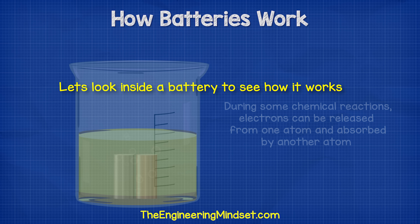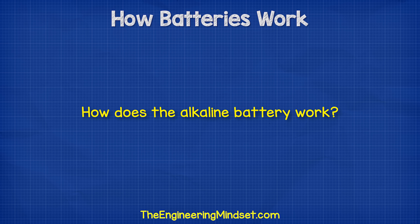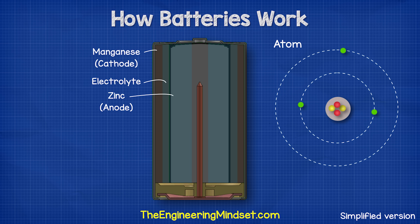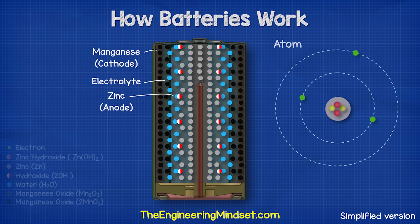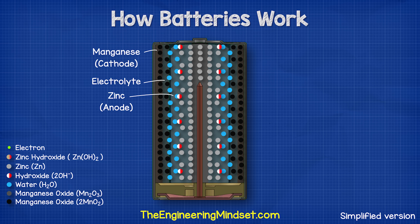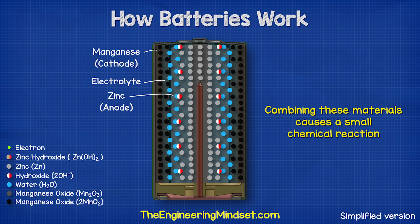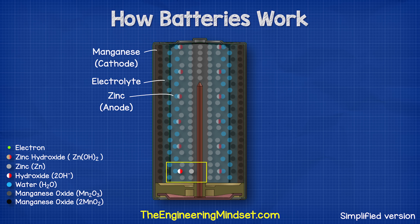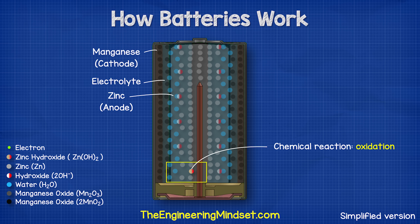Now let's look inside the battery and see how it works. All the different materials inside the battery are made from lots of different atoms tightly packed together, represented by colored balls where each color represents a different material and atom. When we combine all these materials inside the capsule, we get a chemical reaction where atoms start to interact. A hydroxide ion within the electrolyte joins with a zinc atom inside the anode — a reaction known as oxidation — creating zinc hydroxide. As the zinc and hydroxide combine, electrons are released. These free electrons collect on the brass pin.